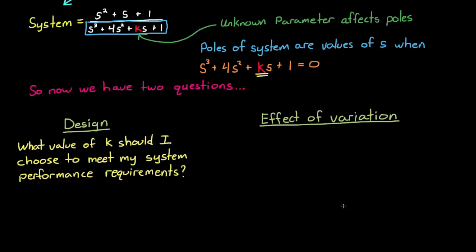And on the system variation side, the question is, what is the effect of the variation of k on the poles of the system? That is, how sensitive is the system to a value of k that is slightly off what you have predicted? And trying to answer these questions is actually pretty simple.